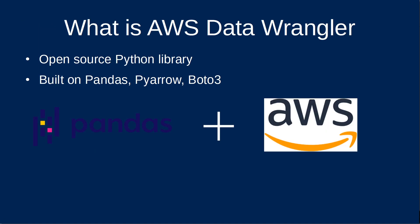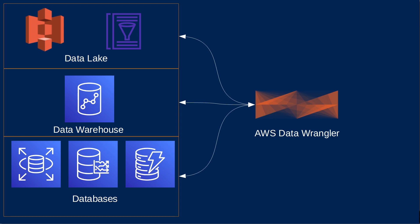AWS Data Wrangler is an open source Python library that extends the power of the Pandas Python library to AWS by connecting Pandas data frames to an array of AWS data-related services. It is built on top of open source projects such as Pandas, Apache Arrow, and Boto3. This offers abstracted functions to execute usual ETL tasks like loading and unloading data from data lakes, data warehouses, and databases using Python.